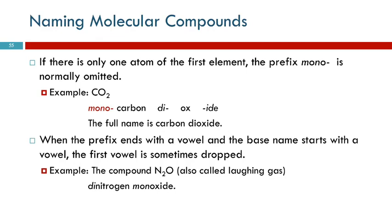Like with the number one that we often just don't write, mono means one, and so there's many times where we leave that off. If it's the first element and there's only one, we usually leave the prefix mono off. So this compound, CO2, it's got exactly two nonmetals, carbon and oxygen.